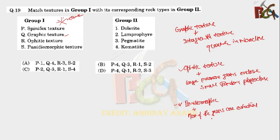Graphic texture is an intergrowth texture between the quartz and microcline. Ophitic texture - when the large pyroxene grains enclose the small random plagioclase laths. And panidiomorphic - most of the grains are euhedral. This is a peculiar texture of what kind of rock? Lamprophyre. Now can you get the answer? As I told you, spinifex texture is formed in ultramafic rock. The only ultramafic rock in this sequence is komatiite.